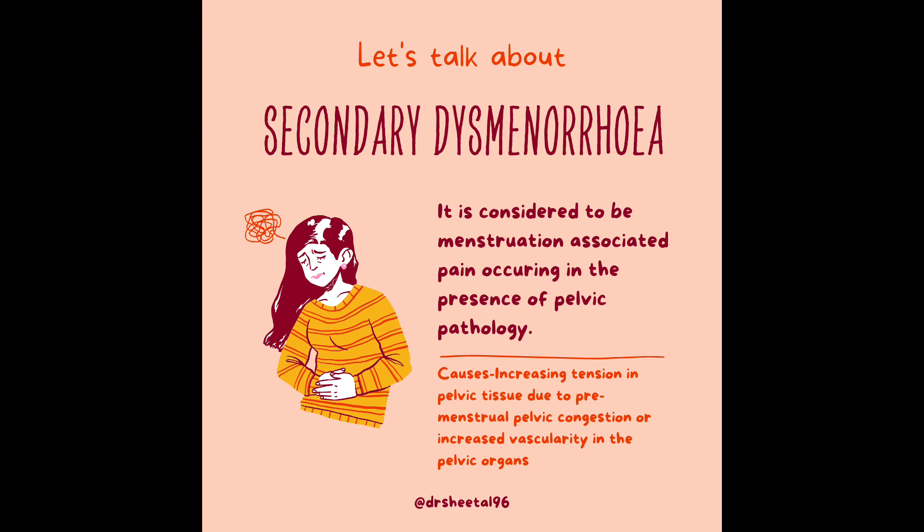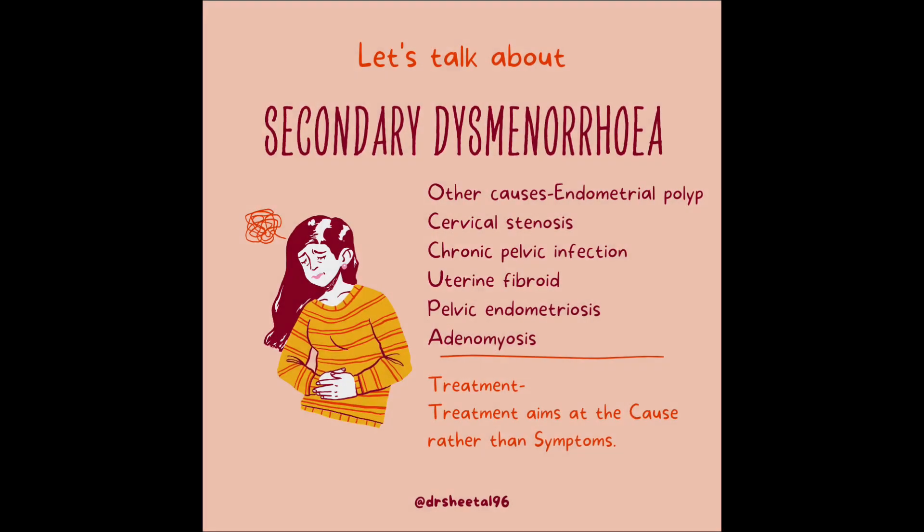Causes of secondary dysmenorrhea include increasing tension in pelvic tissue due to premenstrual pelvic congestion or increased vascularity in the pelvic organs. Other causes include endometrial polyp, cervical stenosis, chronic pelvic infection, uterine fibroid, pelvic endometriosis, and adenomyosis.